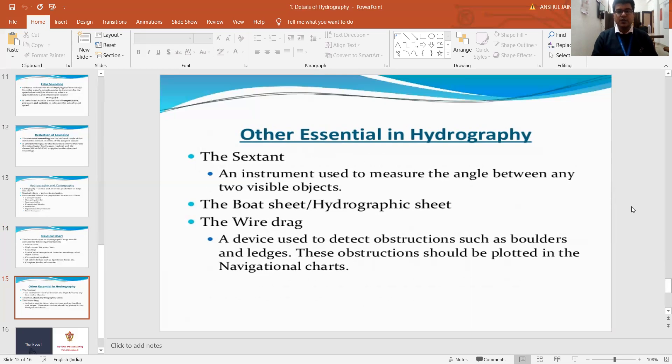Obviously the last term which I am bringing to use: the wire drag. It is a device which detects the obstructions like the boulders or the ice sheets which are available in the water bodies. If we are doing survey work, then we should have a clear vision that the boat should not strike, the ship should not strike with these types of large boulders or ice sheets. These types of obstructions can also be plotted in this hydrographical map or the navigational charts we have prepared.